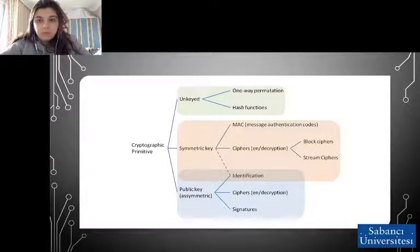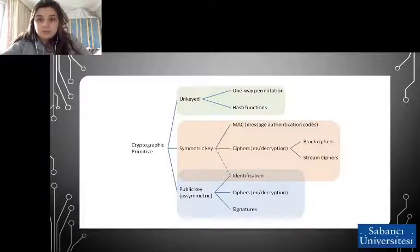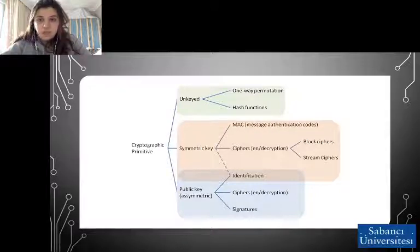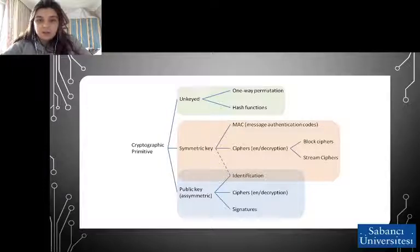Unkeyed primitives are permutations and hash functions. Symmetric key primitives are MACs — message authentication codes — encryption and decryption ciphers, and identifications. Encryption and decryption ciphers are divided into two sections: block ciphers and stream ciphers. Asymmetric key primitives are identifications, encryption and decryption ciphers, and signatures.